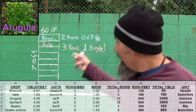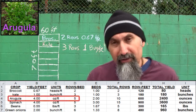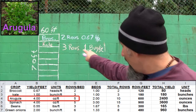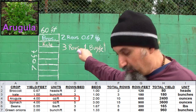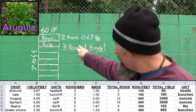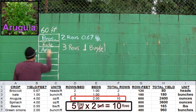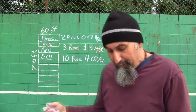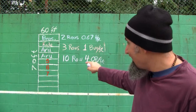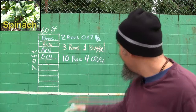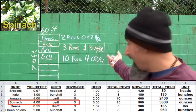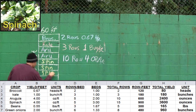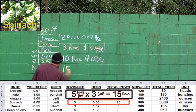In bed number three and bed number four, we're going to plant arugula. For arugula, the units are ounces per foot — you get four ounces for every foot of row that you plant — and you can plant five rows per bed. So if we're planting two beds of arugula, we're going to get a total of ten rows, because we can put five in each bed.